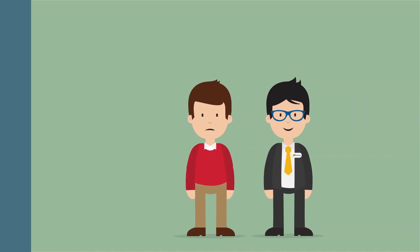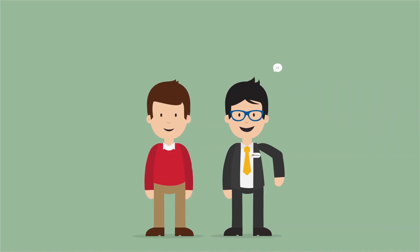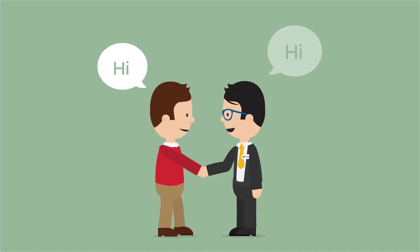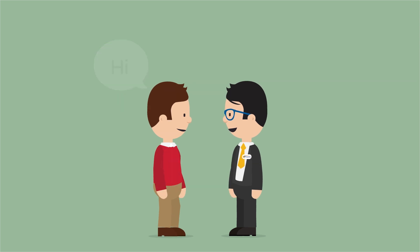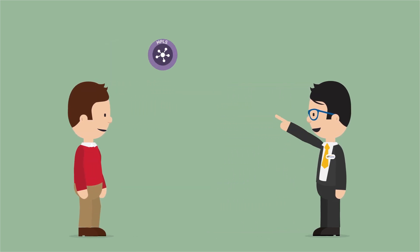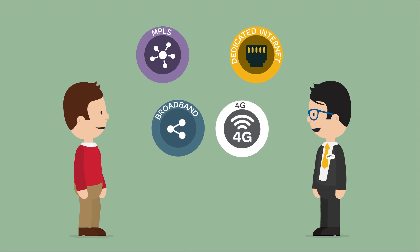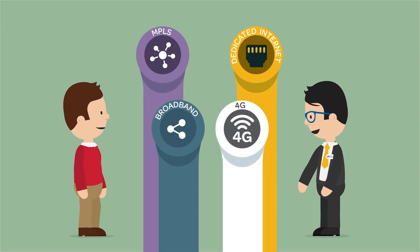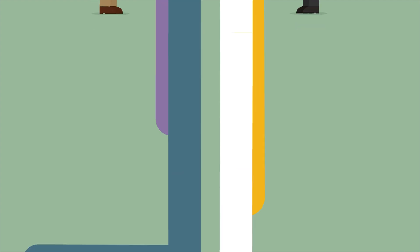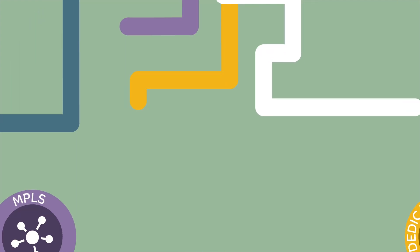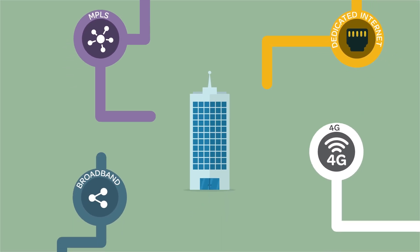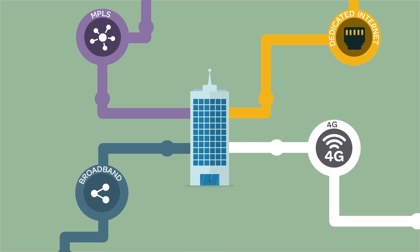So Ed set up a meeting with his NTT Communications account manager Simon. Simon explained to Ed: by activating multiple cost-effective network connections at the same time, we can create a hybrid WAN. And this helps give your network more bandwidth and higher availability.